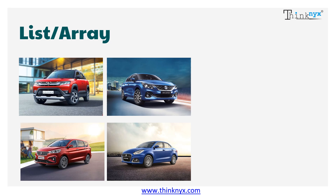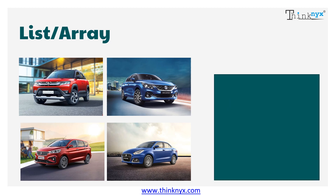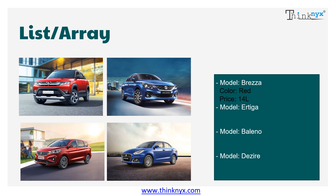Let's now talk about lists. Let's assume we have to denote four models of Maruti. These four models belong to the same brand, which is Maruti. To store different data which belongs to the same type of object, we can use a list or an array in YAML. The lists are represented using a hyphen followed by a space followed by the data. What if we want to note the properties of each car such as its color and price? We can use a dictionary inside lists. This type of representation in YAML is called a list of dictionaries.